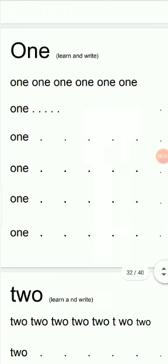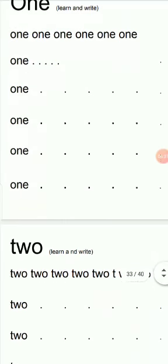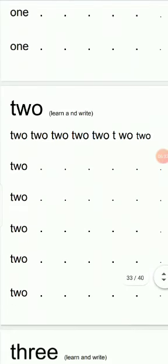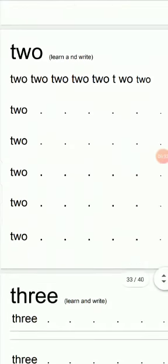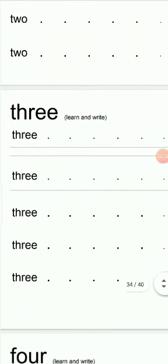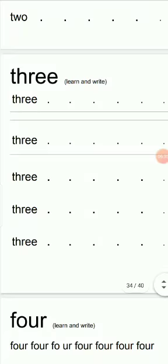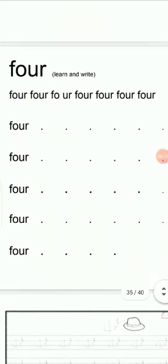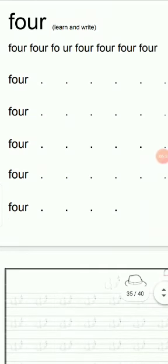Number names: 1 — O, N, E; 2 — T, W, O; 3 — T, H, R, E, E; 4 — F, O, U, R.